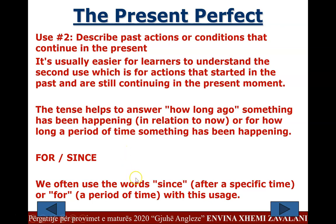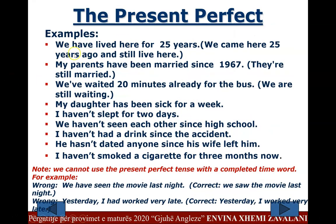For / Since: We often use the word 'since' after a specific time, or 'for' a period of time with this usage. Examples: 'We have lived here for 25 years.' 'My parents have been married since 1967.' 'We've waited 20 minutes already for the bus.' 'My daughter has been sick for a week.' 'I haven't slept for two days.' 'We haven't seen each other since high school.' 'I haven't had a drink since the accident.' 'He hasn't dated anyone since his wife left him.' 'I haven't smoked a cigarette for three months now.'